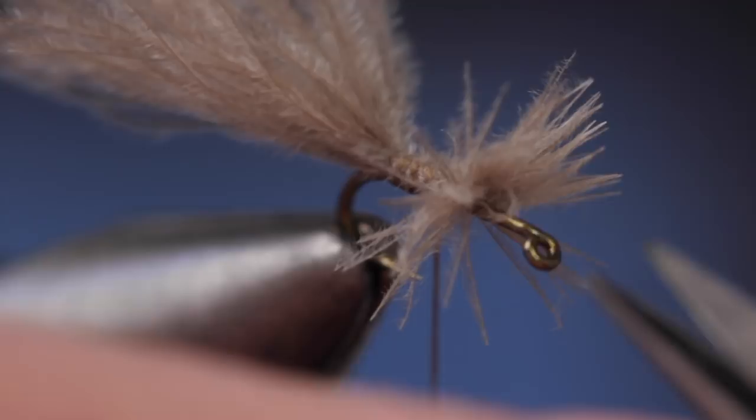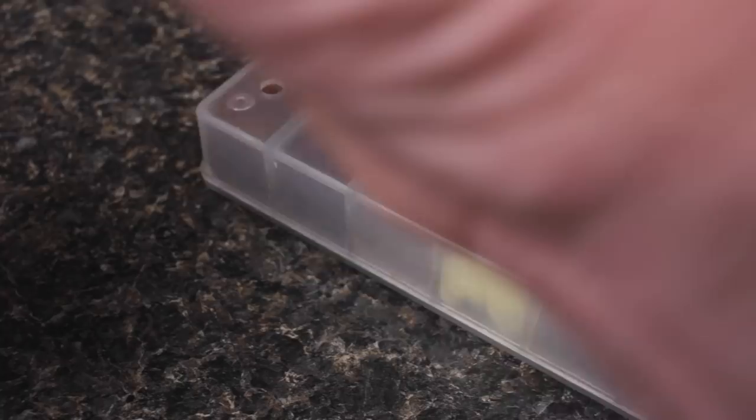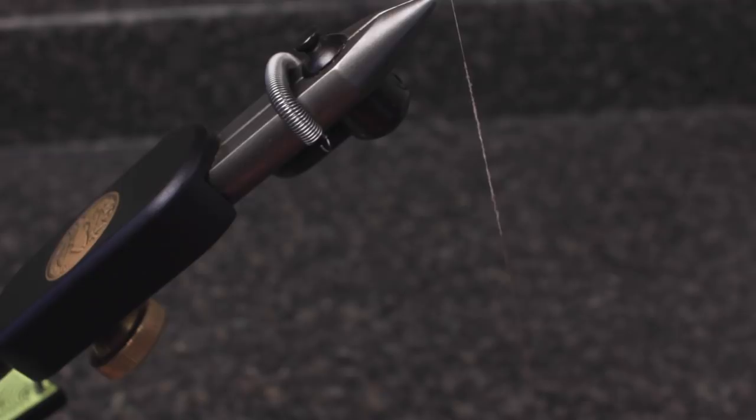Here, Matt's going to use natural colored Australian possum for the body of the fly, but use whatever color you like to match the naturals. Red, gray, black, cream, and olive are all very popular. Form an ever so thin dubbing noodle on your tying thread, really just enough to color it.